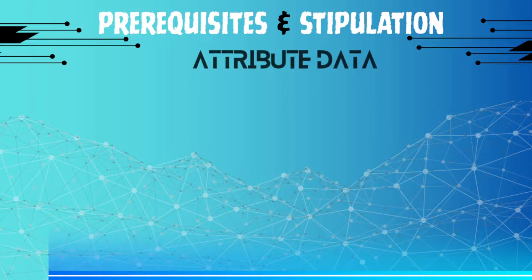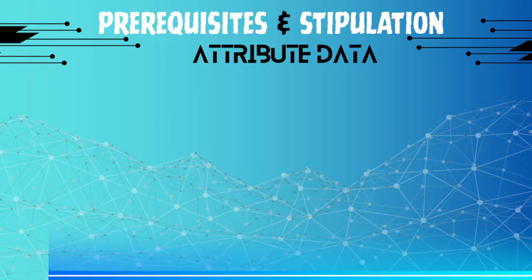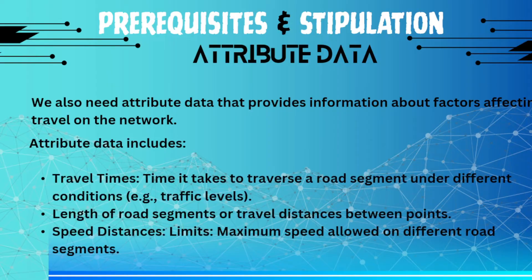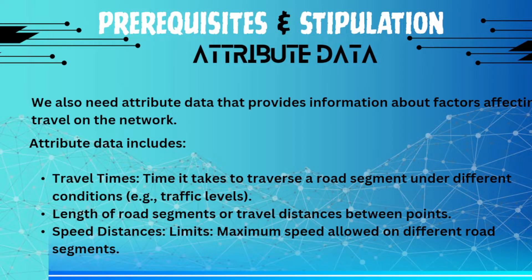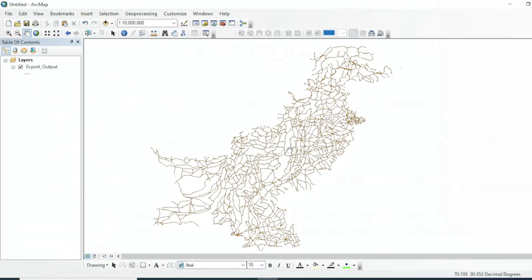These line features represent road networks and each line feature is interconnected with other line features. For attribute data, you need three characteristics: travel time — how much time is required to cover one segment of the road — the length of that road segment in miles, and the speed limit, which is the maximum speed allowed on that particular segment.